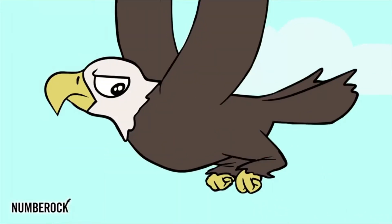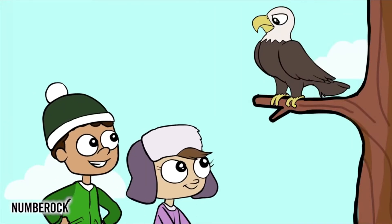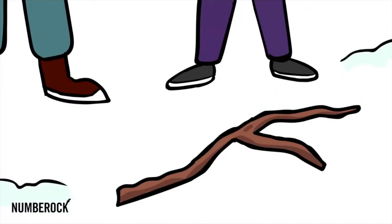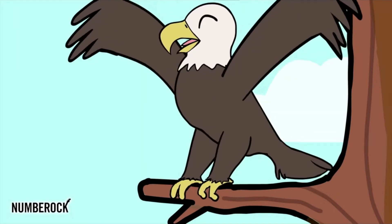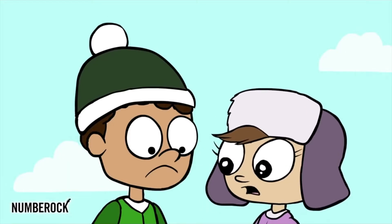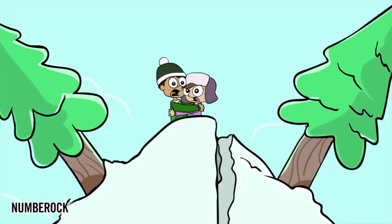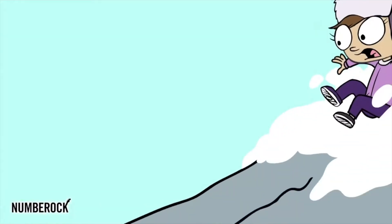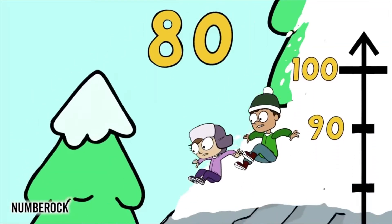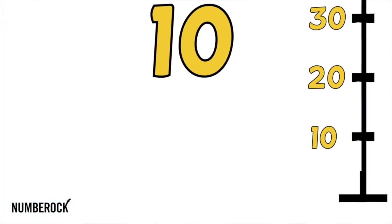We saw a bald eagle and asked him to be our friend and count along by 10. He said: 'I can't count, but watch out! Don't step on that branch! If you break it, you might start an avalanche!' We're at the top of the mountain and about to descend, counting down to the ground in groups of 10: 100, 90, 80, 70, 60, 50, 40, 30, 20, and then 10.